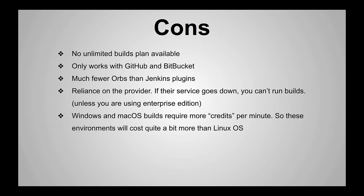Some of the cons: no unlimited build plans available — no unlimited build minutes or unlimited number of builds. It only works with GitHub and Bitbucket, so you're out of luck if your code is stored elsewhere. They don't have nearly as many orbs as Jenkins has plugins, so Jenkins has a clear advantage there. There's also reliance on the provider — if Circle CI goes down, your builds don't run. Additionally, Windows and Mac OS builds require more credits per minute than regular Linux builds, and Linux has smaller Docker images available.